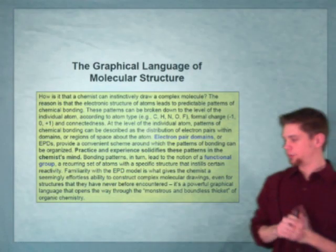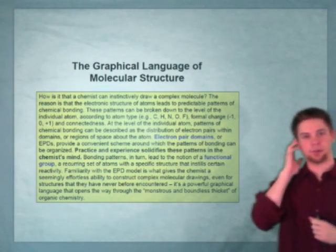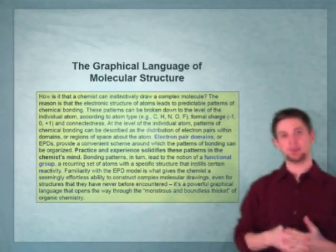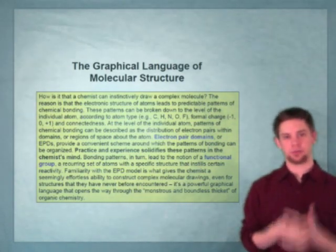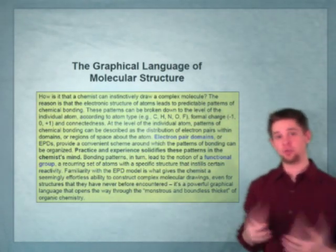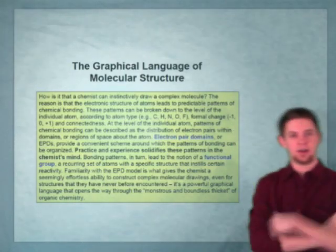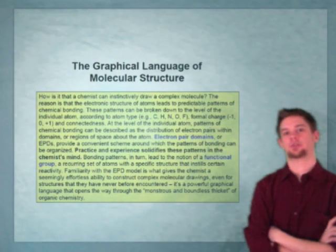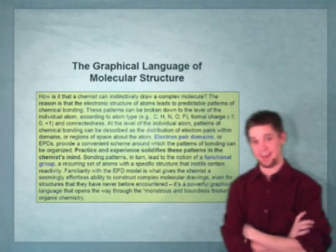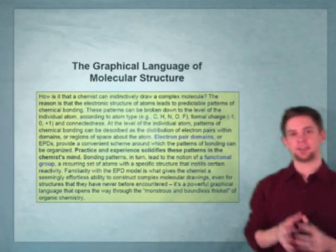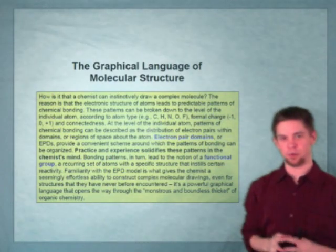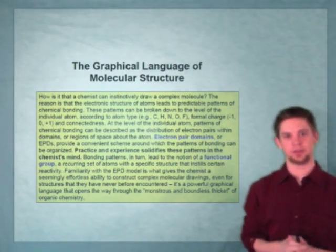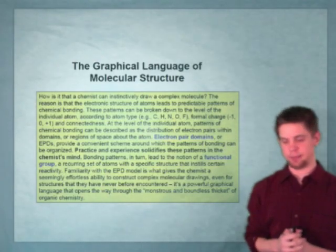Organic chemistry is primarily a graphical language. That means that chemists communicate to one another through graphical structures. We rely on a structure-drawing convention called Lewis structures, which has been around since time immemorial. This is a convention that you should get very familiar with and used to seeing, as Lewis structures are absolutely critical for the study of organic chemistry.